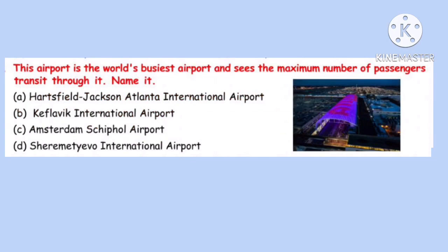Question 18. This airport is the world's busiest airport and sees the maximum number of passenger transits through it. Name it. Correct option is A: Hartsfield-Jackson Atlanta International Airport, situated in the United States.